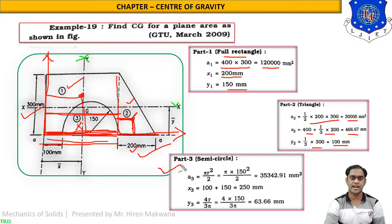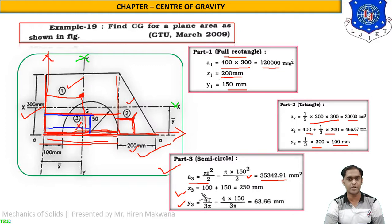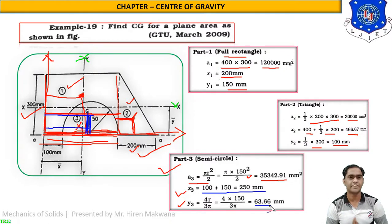For part three, the semicircle: radius r = 150 mm, so area = πr²/2 = π × 150² / 2 = 35,342.91 mm². x3 = 100 mm gap + radius = 100 + 150 = 250 mm. y3 = 4r/(3π) = 4 × 150 / (3π) = 63.66 mm.